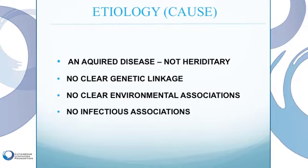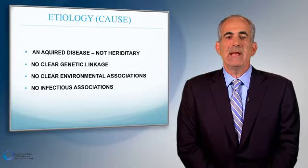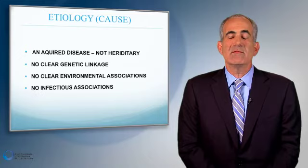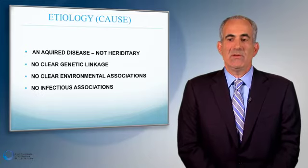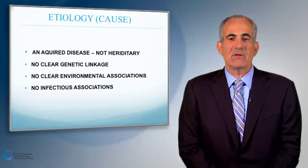The next topic is etiology, or cause of the disease. Lymphomas are an acquired disease — they're not hereditary. We don't have a definitive set of genes that we know are responsible for the risk of cutaneous lymphomas. We know that immune genes are involved and that some people's immune genes may play a more significant role in processing things in the environment, which may contribute to the development of cutaneous lymphoma. There has also been speculation about environmental associations — different infectious diseases, viruses, bacteria — that may cause or contribute to cutaneous lymphomas, but we have no definite link.